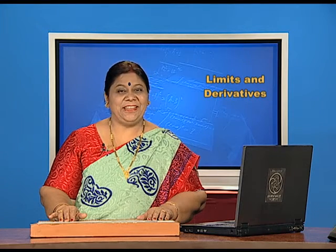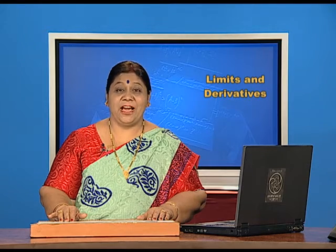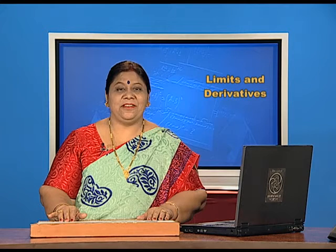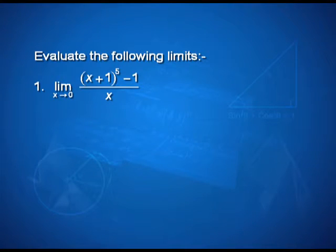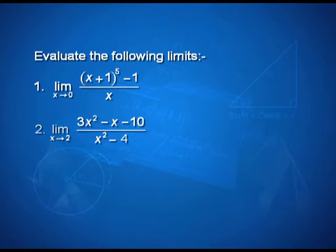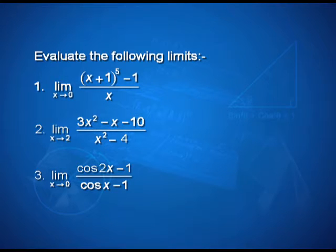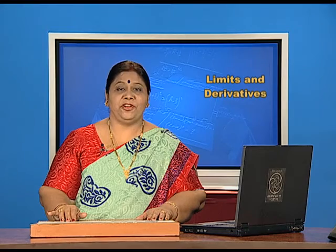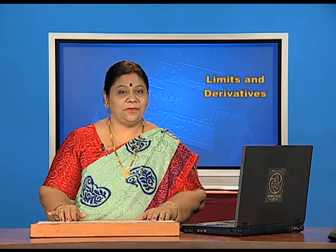So students, today you studied about the algebra of limits. I hope you have understood. Now it is time to take up the assignment. Question number 1: evaluate limit of (x plus 1) raised to 5 minus 1 upon x as x tends to 0. Question number 2: limit of (3x square minus x minus 10) upon (x square minus 4) as x tends to 2. Question number 3: limit of (cos 2x minus 1) upon (cos x minus 1) as x tends to 0. In the next session, we shall study about limits of trigonometric functions and some important theorems. Thank you.